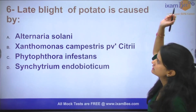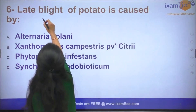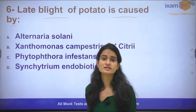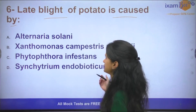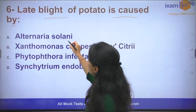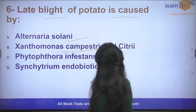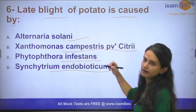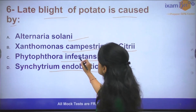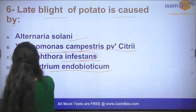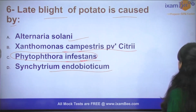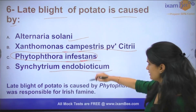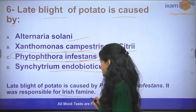Moving on to the next question: Late blight of potato is caused by which pathogen? The answer is Phytophthora infestans. Phytophthora infestans is the pathogen — a fungus — which causes late blight of potato. This was also responsible for the Irish famine.